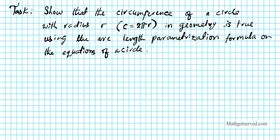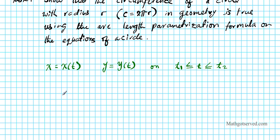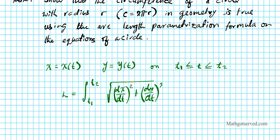Before we do that, let's look at the arc length formula. If we have a curve defined by x equals x of t and y equals y of t, on the interval t1 less than or equal to t less than or equal to t2, then the arc length from t1 to t2 is the integral from t1 to t2 of the square root of (dx/dt) squared plus (dy/dt) squared, dt. This is the formula we'll apply to our circle's parameterization from 0 to 2 pi.